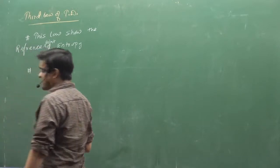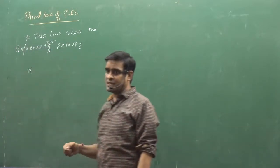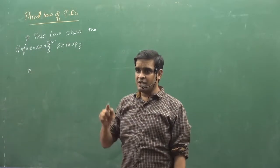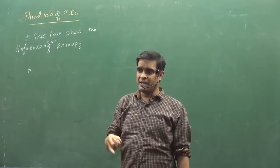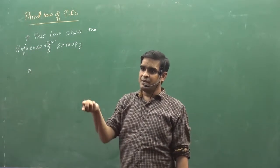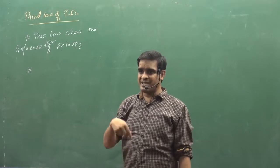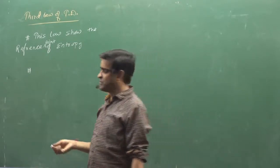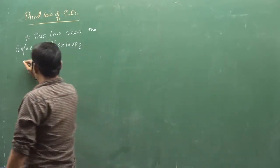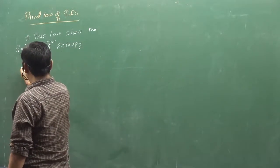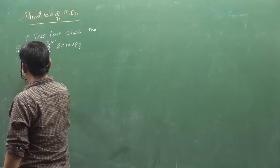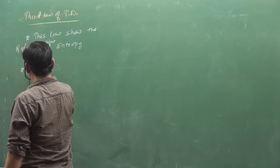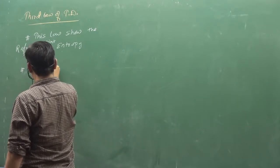How do we make a reference point? We make a reference point at zero Kelvin temperature. For a pure substance at zero Kelvin temperature, what does entropy mean? According to this law, this is our answer.